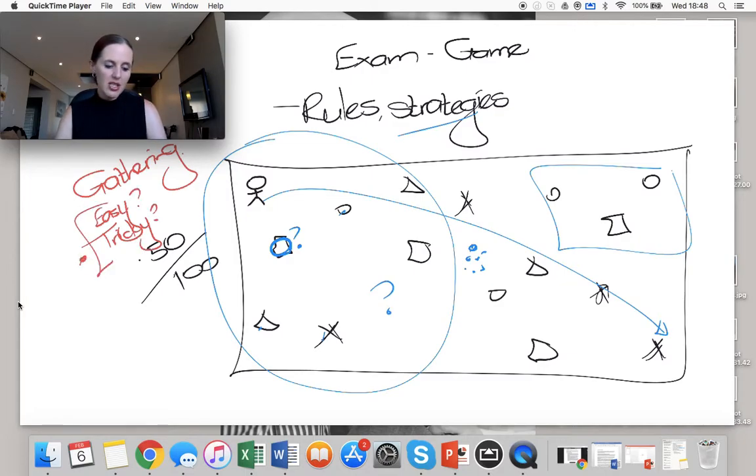Accounting students have a tendency to lean towards getting tricky marks because they feel that that is a better indication of how much they know. The reality is that you get one mark for something easy and one mark for something tricky, it's the same mark.